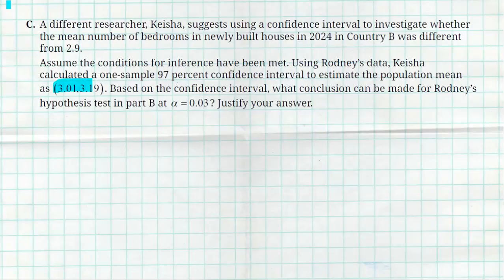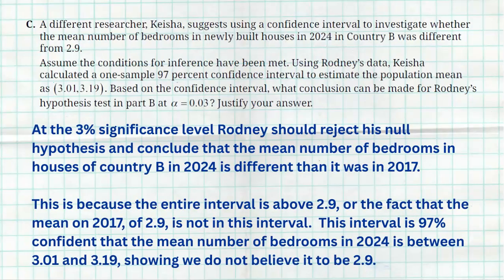Kaisha is 97% confident that in 2024, the mean number of bedrooms in newly built houses in Country B is somewhere between 3.01 and 3.19. That entire interval does not include 2.9, which means Rodney should reject the null. At the 3% significance level, Rodney should reject the null hypothesis and conclude that the mean number of bedrooms in houses in Country B in 2024 is different than it was in 2017. The entire interval is above 2.9, so we do not believe 2.9 is the mean in 2024.